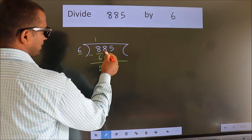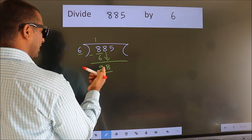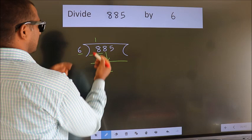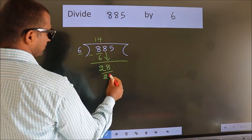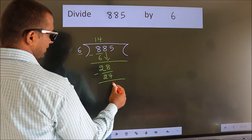bring down the beside number. So, 8 down. So, 28. A number close to 28 in 6 table is 6×4=24. Now, we subtract. We get 4.